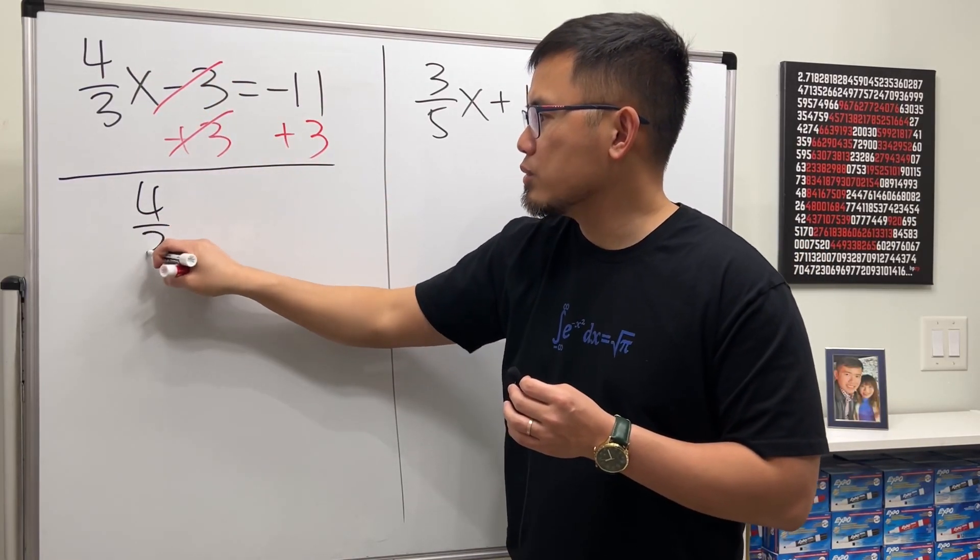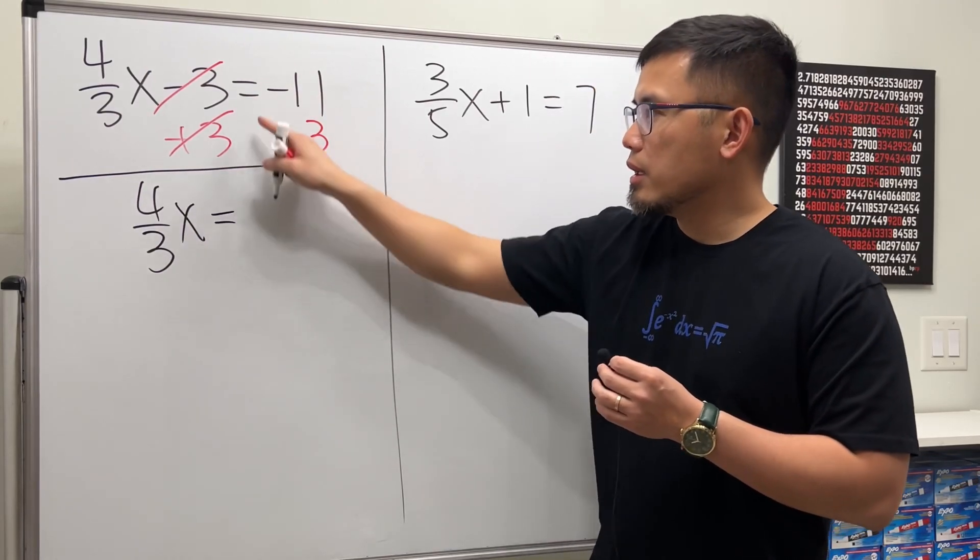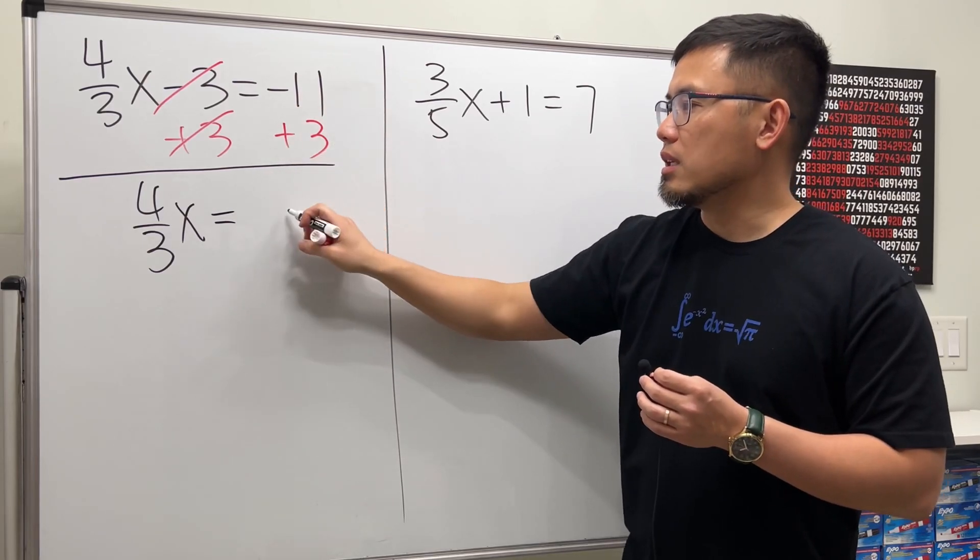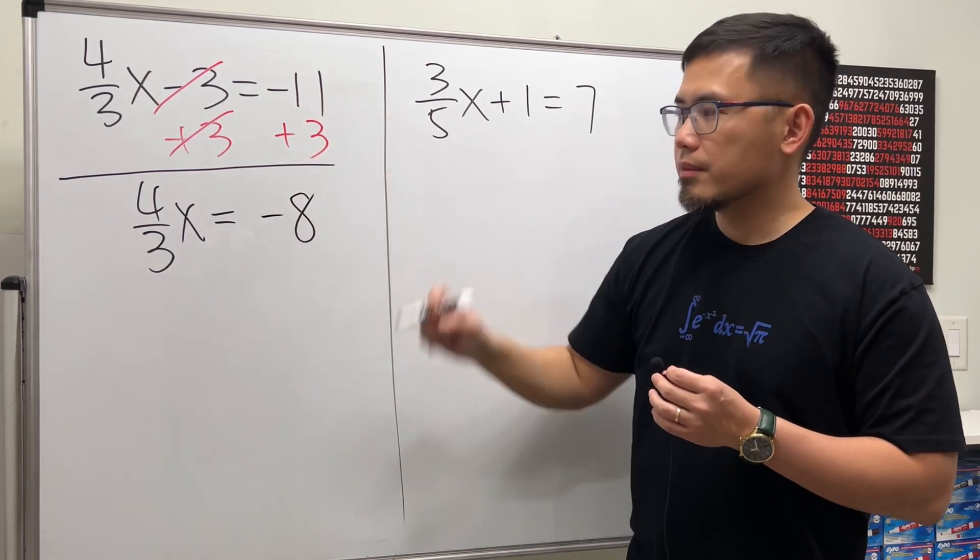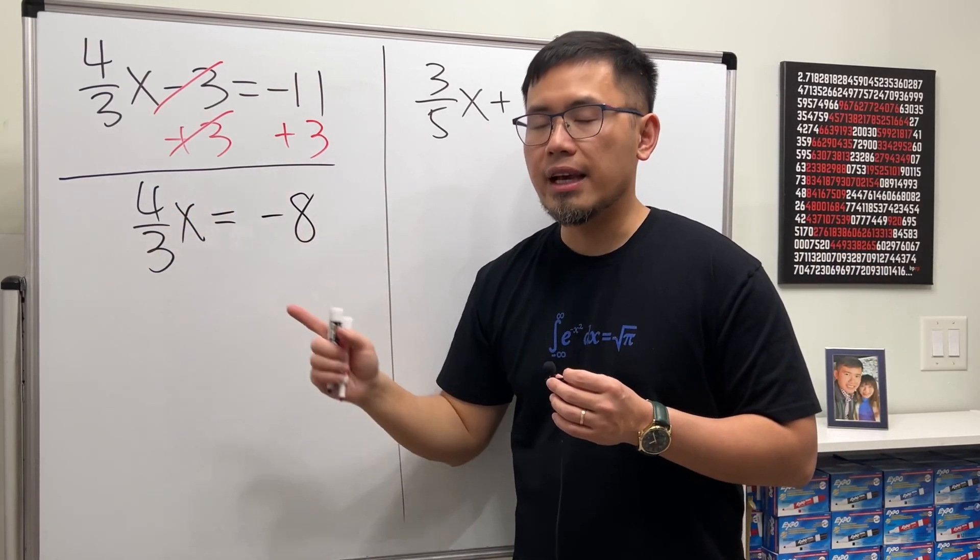Then here you will just have 4/3 times x, and that equals—line up with the equal sign—negative 11 plus 3, which is negative 8. Now 4/3 times x equals negative 8.